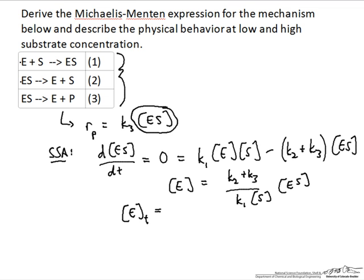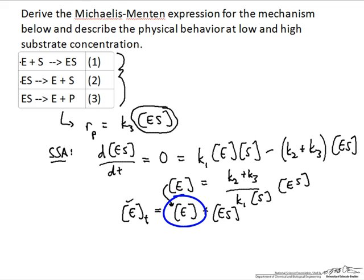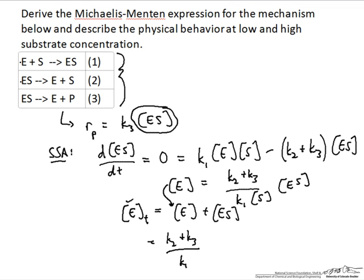The next thing we can do is what's known as a site balance or an overall enzyme balance. We recognize that the total concentration of enzyme originally added — which may during the reaction either have substrate bound or be free — has to be constant. Since the enzyme is not destroyed as a catalyst, the total amount is fixed. During the reaction, some will be free enzyme and some will be enzyme-substrate complex. We can plug in from the equation above to solve for the total enzyme concentration in terms of only the enzyme-substrate complex.